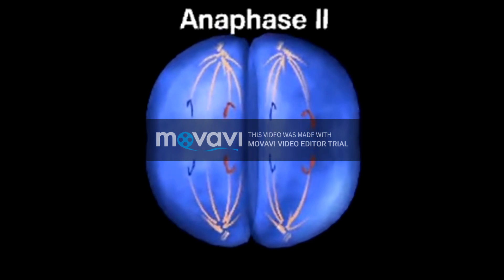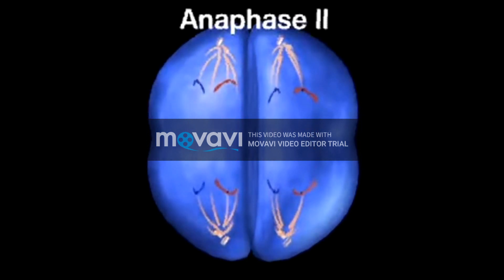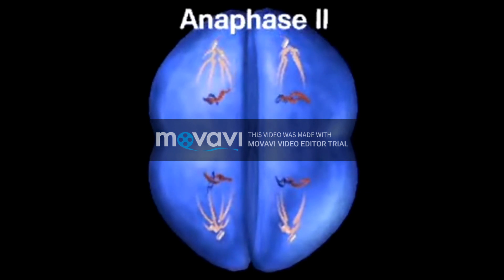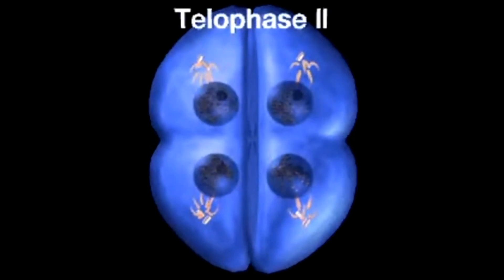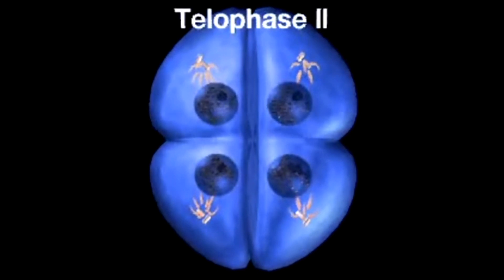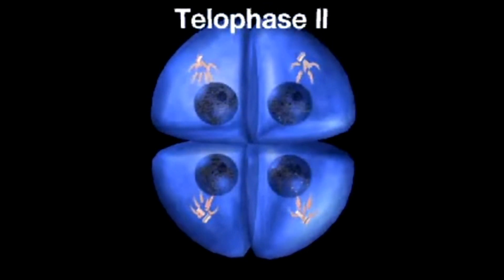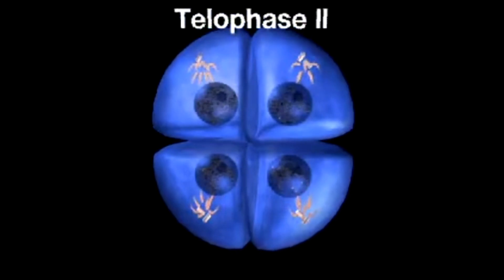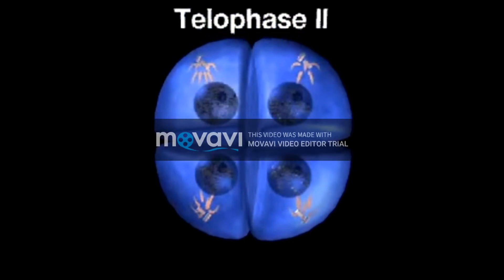Anaphase II begins as the centromere of each chromosome splits, allowing the sister chromatids to separate and move to opposite poles. During telophase II, nuclei reform, the spindle breaks down, and the cytoplasm divides. Four cells, each with half the number of chromosomes, are present.